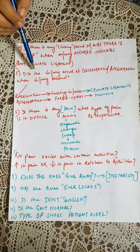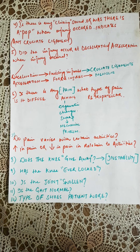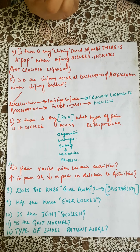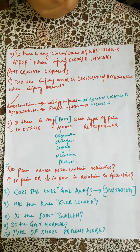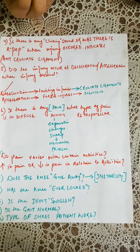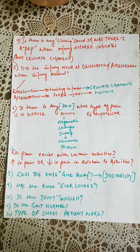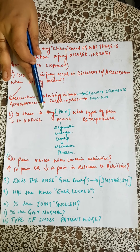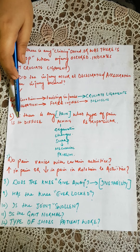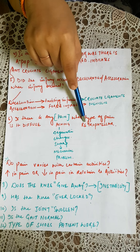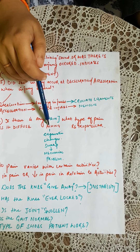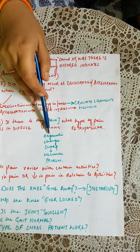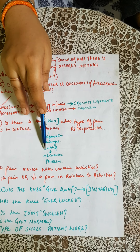The fifth question is whether the injury occurred due to a deceleration force, acceleration force, or constant speed. Acceleration and twisting injuries may involve the meniscus, deceleration injuries often involve the cruciate ligaments (ACL or PCL), and constant speed with cutting may involve the anterior cruciate ligament. The sixth question concerns pain type — whether it is diffuse, aching, or retropatellar. Aching pain indicates degeneration such as osteoarthritis, while sharp pain indicates a mechanical problem.